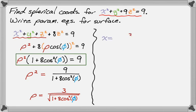So x is ρ, that thing we just found—it's kind of gross. It's 3/√(1 + 8cos²(φ)) times cos(θ)sin(φ).